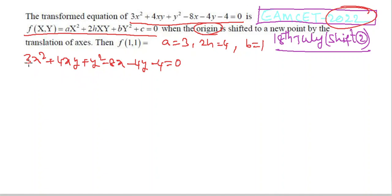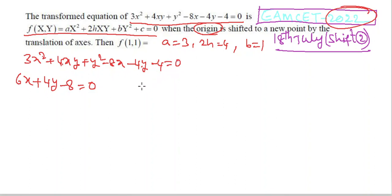Using the shortcut method: take partial differentiation with respect to x, treating all y terms and constants as constant. Derivative of 3x² is 6x; 4xy gives 4y; y² gives 0; −8x gives −8; −4y gives 0. So 6x + 4y − 8 = 0.